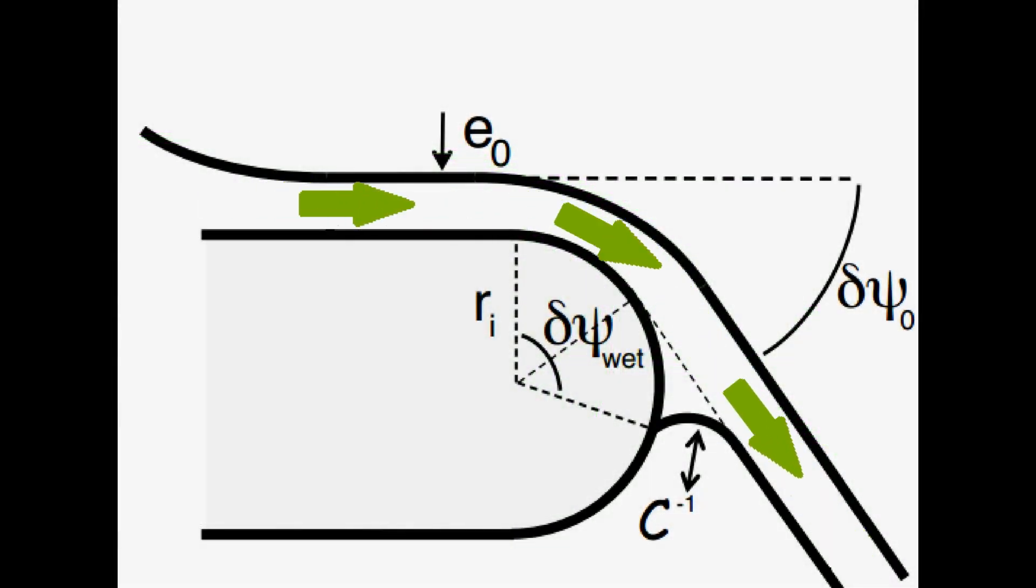This is a schematic view of the spout during operation. At this scale, one ignores the effect of gravity on the fluid. The fluid flows over the spout as a thin film of thickness E0.